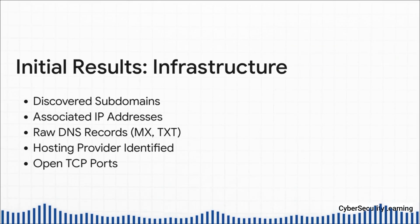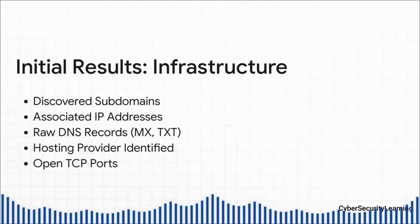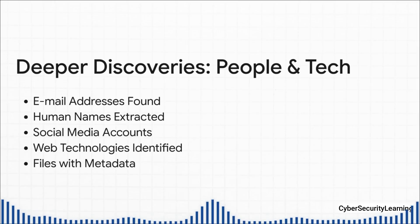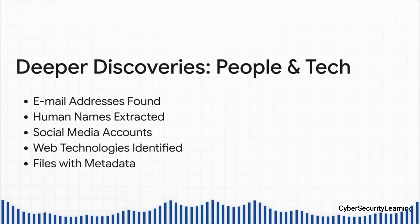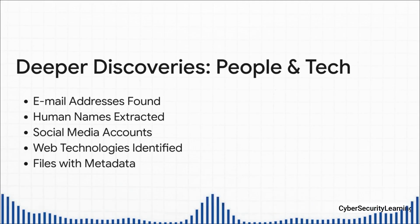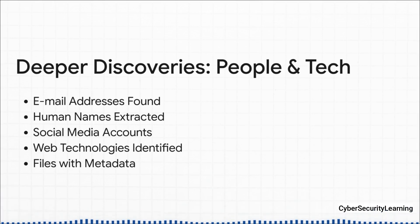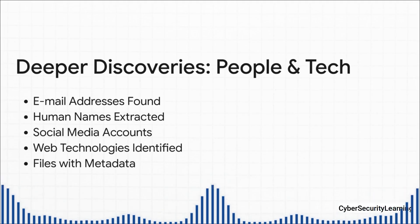Immediately, the first wave of modules kicks in, mapping out the raw infrastructure — finding subdomains, the IP addresses they point to, and pulling raw DNS records like MX records that tell you about their email setup. It'll identify who the hosting provider is, whether they're on AWS, and port scanners will start checking those IPs for any open doors. Then the real magic begins. All of that infrastructure data becomes food for the next set of modules. The web spider starts crawling the sites it found, scraping out email addresses and people's names. Those names and emails are automatically fed to social media modules to find profiles. Other modules identify web technologies being used — is it a vulnerable version of WordPress? It even finds PDFs and images, pulling out hidden metadata. We started with one domain, and now we have a rich map of infrastructure, technology, and the people connected to it.